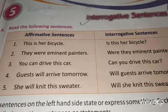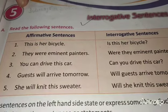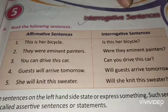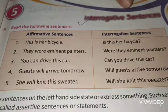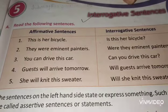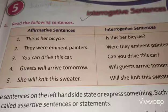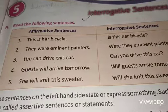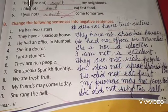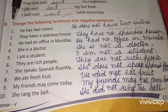Dear children, today we will study chapter 5 of our grammar book — interrogative sentences. But before that, we will complete the remaining exercises of our previous chapter, that is chapter number 4. We have done the chapter on negative sentences, so this exercise was left.